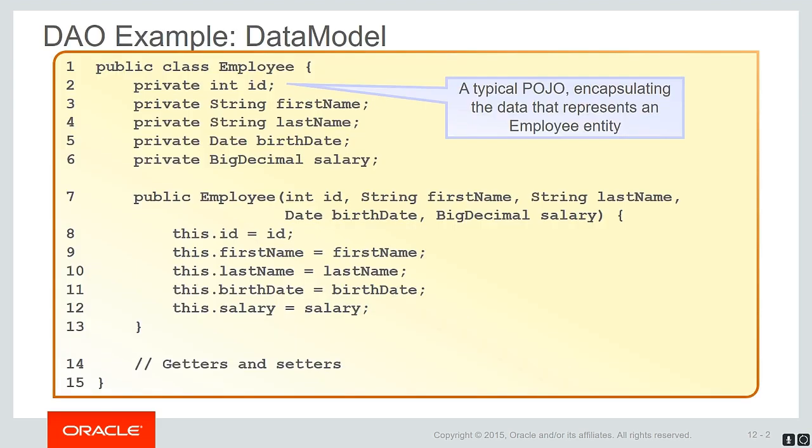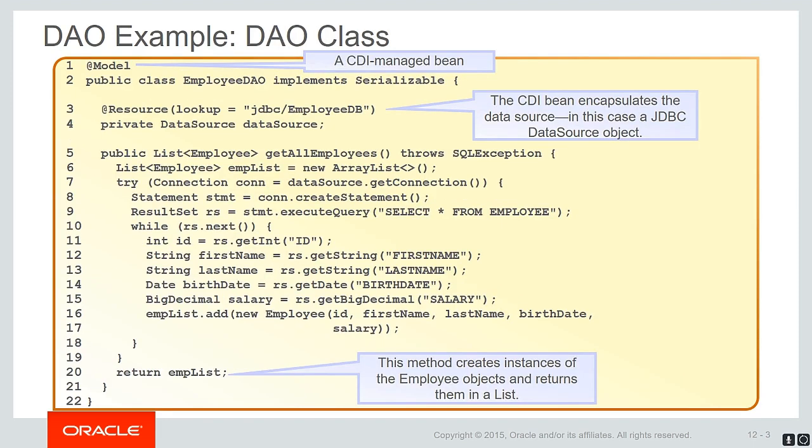Here we have a DAO example of the data model. The Employee class is a typical POJO, encapsulating the data that represents an employee entity, usually a table in the relational database. This is a DAO example of a DAO class.